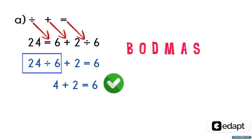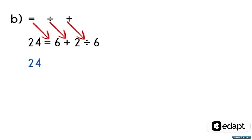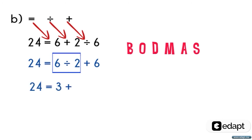Now we will see by substituting all other options into the equation. So let us take option B. It will become 24 is equal to 6 divided by 2 plus 6. Now using the BODMAS rule, the first order is division, which will make it as 6 divided by 2 is equal to 3. As 6 plus 3 is not equal to 24, option B is false.